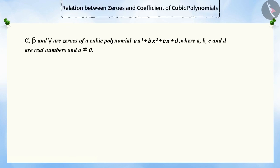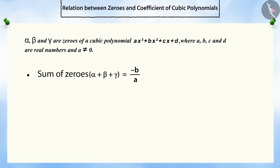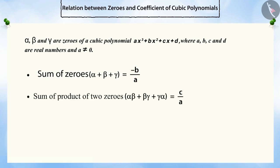Similarly, if alpha, beta, and gamma are zeros of a cubic polynomial AX cubed plus BX squared plus CX plus D, then the sum of the zeros is minus B by A, the sum of the product of two zeros is C by A, and the product of all zeros is minus D by A.